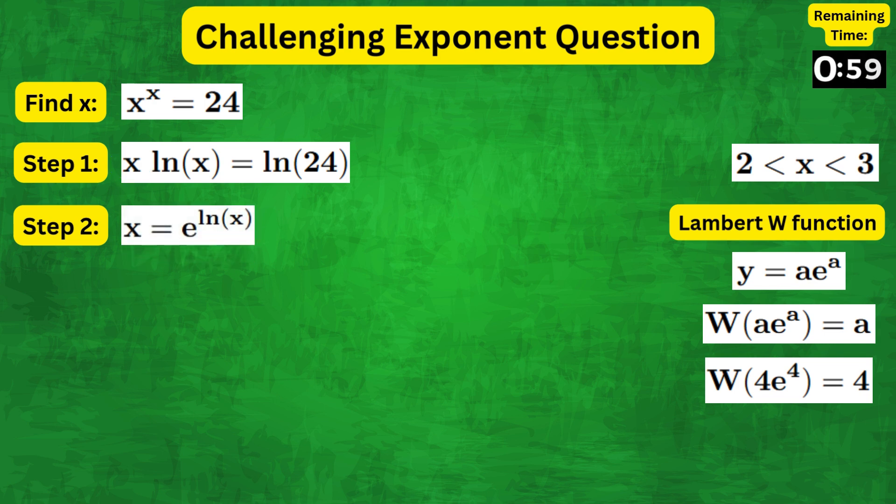Therefore, the equation can be written as e to the natural log of x times natural log of x equals natural log of 24.